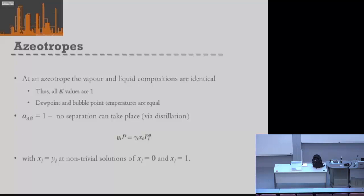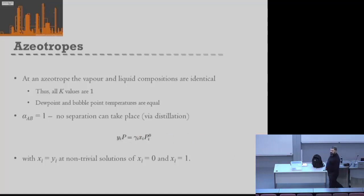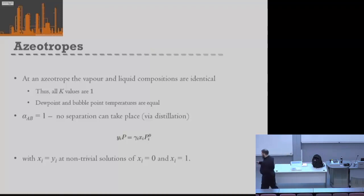We can find the values of our azeotrope by solving our non-ideal Raoult's law for where our x and y values are the same. Of course we get 0 and 1, which is each pure component, but we also get a third point which is our azeotrope in the system.